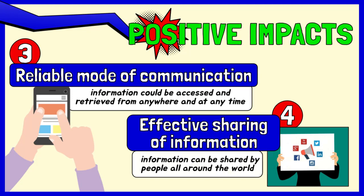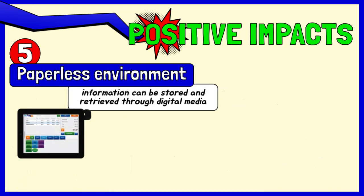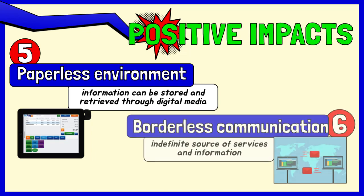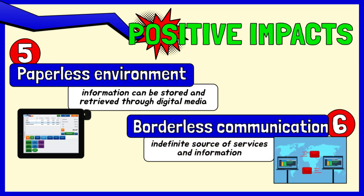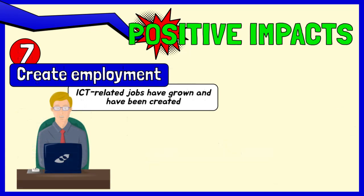Effective sharing of information: with the advancement of ICT, information can be shared by people all around the world. People can share and exchange opinions, news, and information through discussion groups and social media sites. Paperless environment: information can be stored and retrieved through digital media instead of paper. The internet has become a borderless source of services and information. Create employment: examples of jobs that have grown and been created are IT technicians, computer programmers, and web designers.